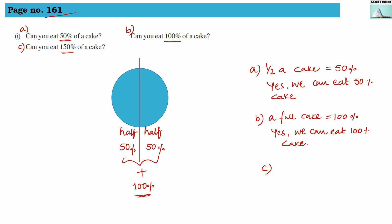For question c, can you eat 150% of a cake? 150% means if we have another cake and from that we take a half — that 50% added to the 100% gives 150%. But here we have only one cake. So from one cake, we cannot eat 150%. The answer for question c is no — we cannot eat 150% of one cake.